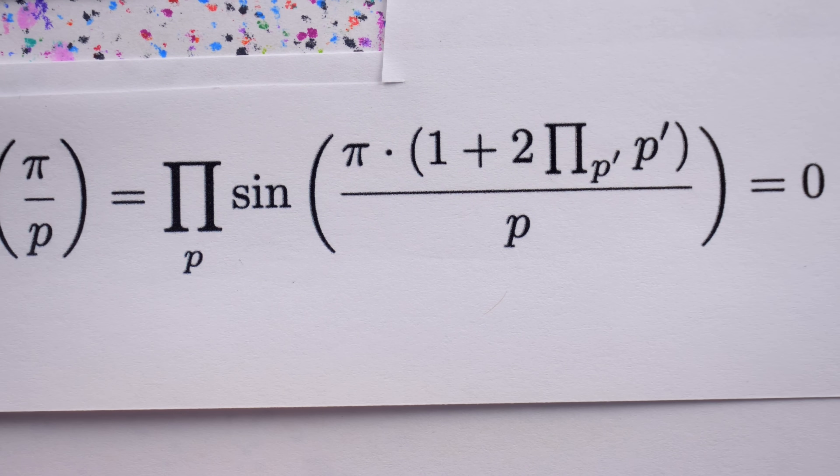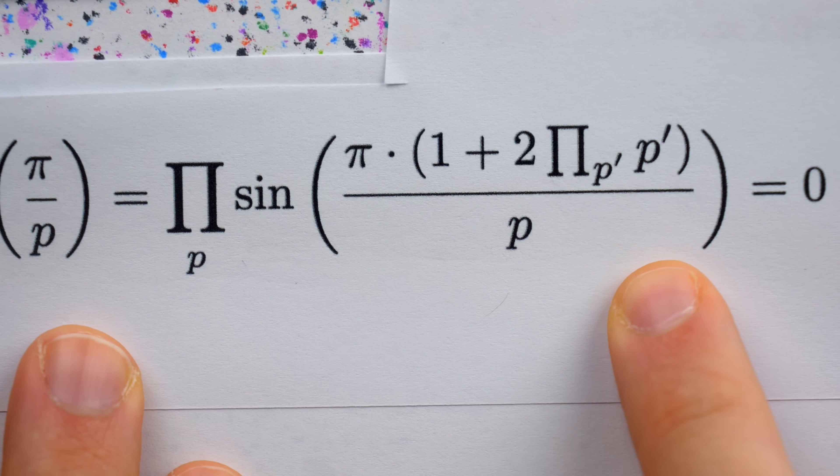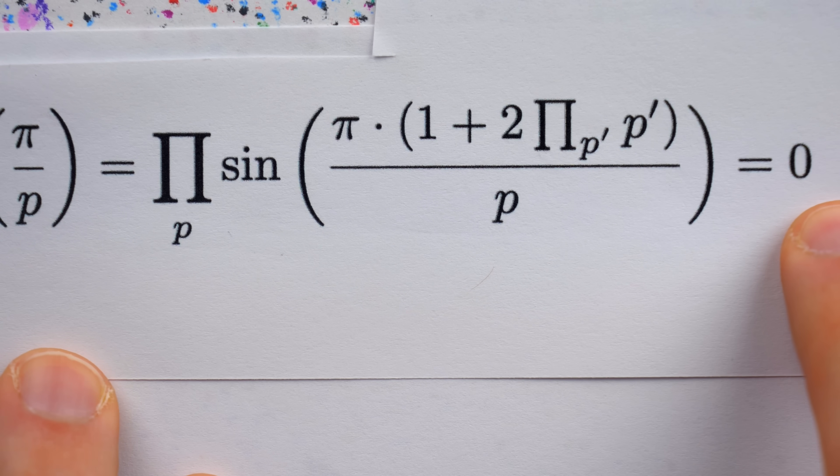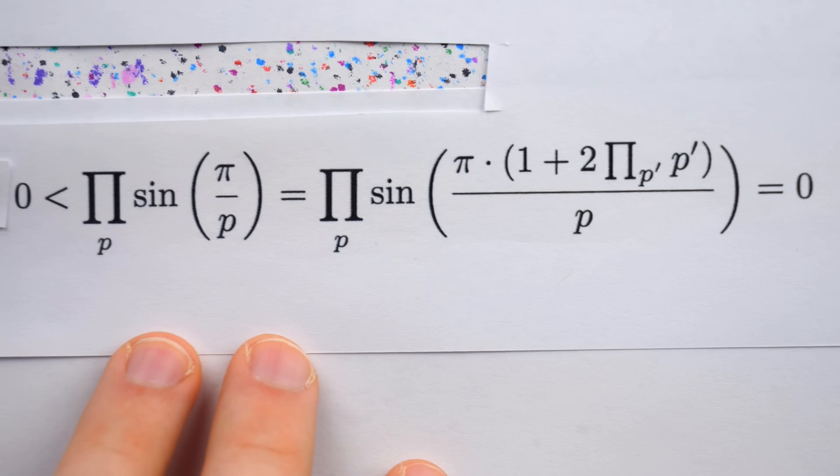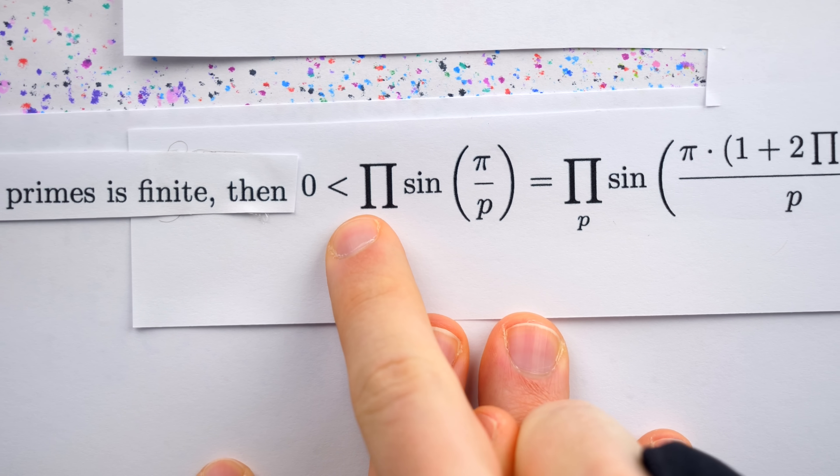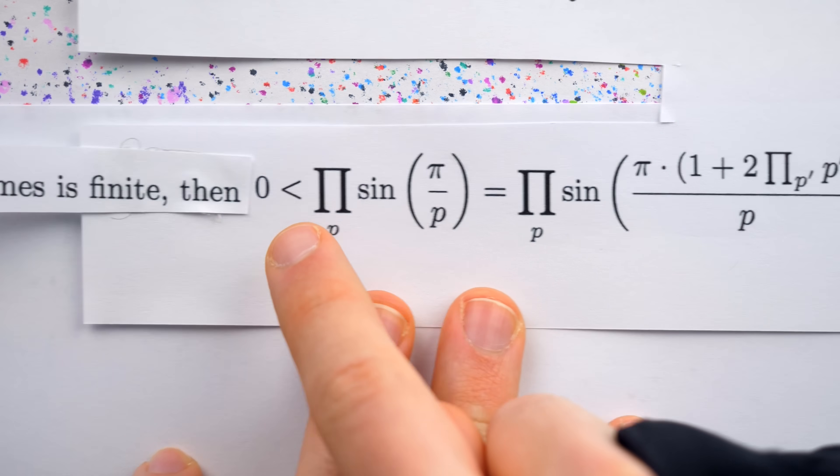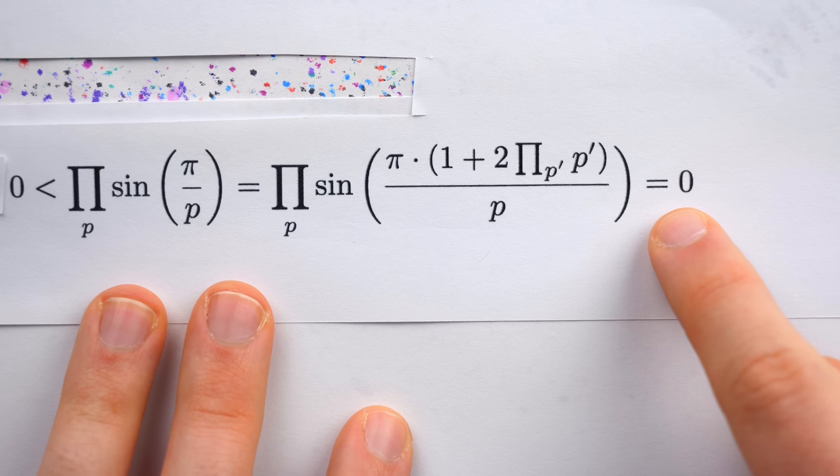And then the contradiction arrives, because this expression is equal to zero. But at the very start of the proof, we said that it was greater than zero.